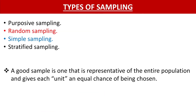Now coming to the types of sampling. The different types of sampling are purposive sampling, random sampling, simple sampling, and stratified sampling. Students, please remember this — it might form a viva or interview question where the examiner asks what the different types of sampling are. Also remember that a good sample is the one that is representative of the entire population and gives each unit an equal chance of being chosen.